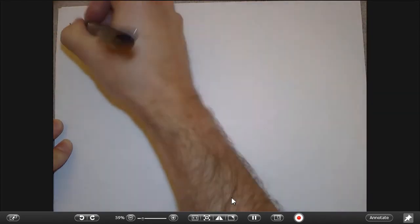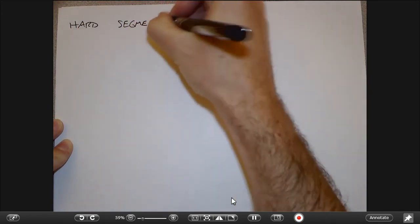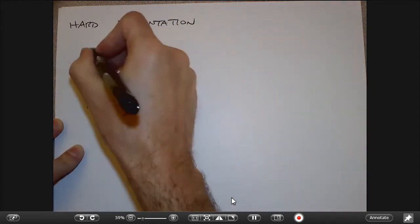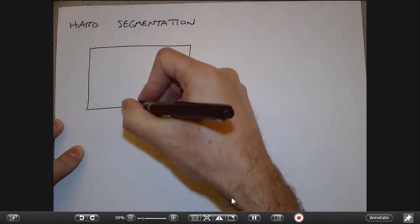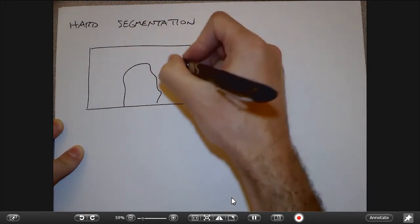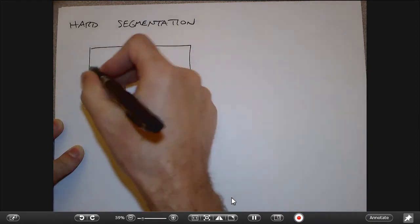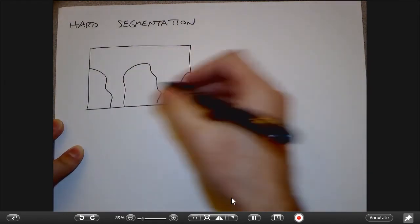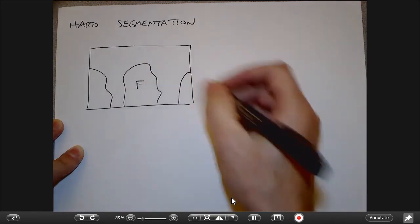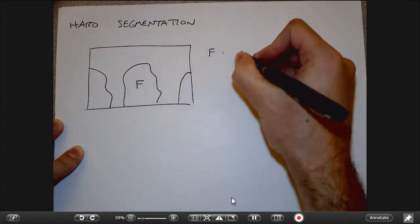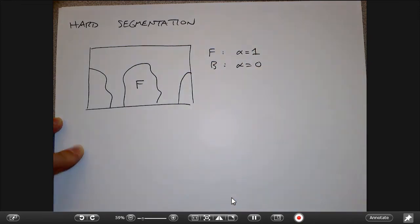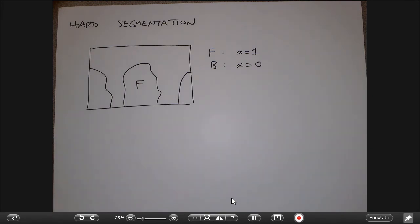The first topic is hard segmentation. The premise is taking an image and chopping it up into pieces — foreground pieces that are like puzzle pieces snapping back together to form the whole. The foreground has alpha equals one and the background has alpha equals zero, with no fuzziness at all. This is useful for general image understanding, like picking out people, cars, or bicycles, where you don't need soft fringy edges on the segments.